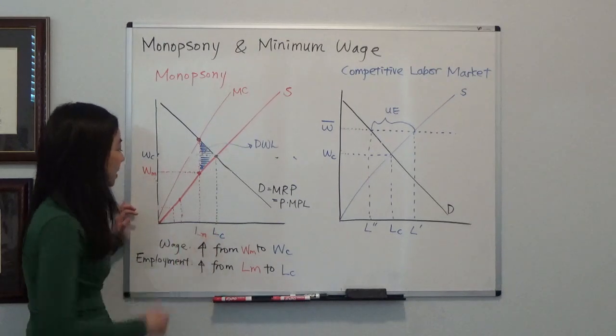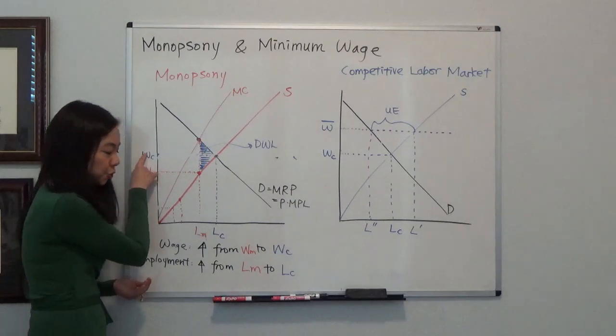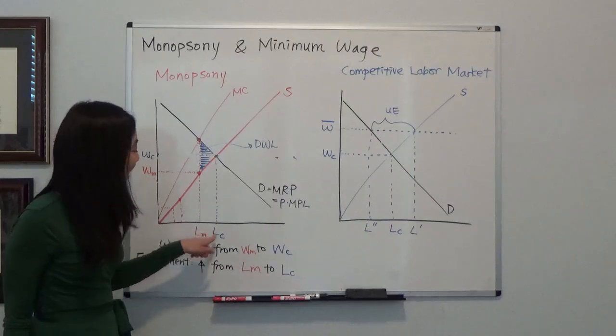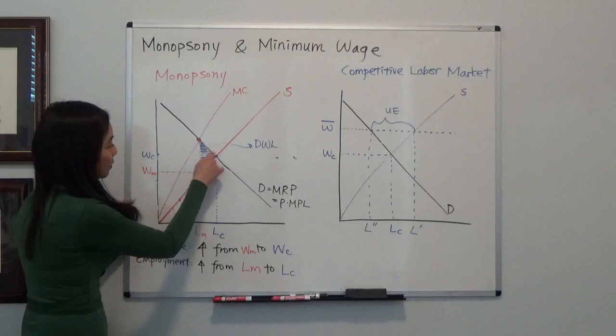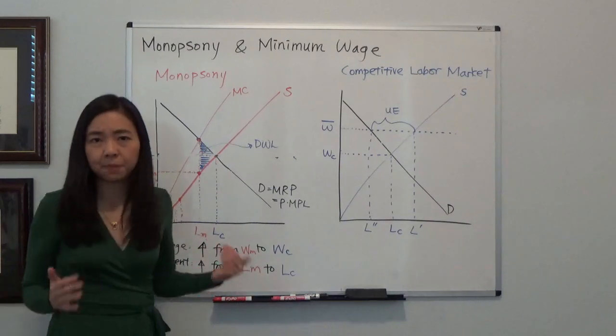So you can see that under monopsony, the wage is lower than the competitive wage. And also, the number of workers hired will be less than the competitive market. And therefore, you can see there is a deadweight loss here. So that, in general, that's a bad thing.